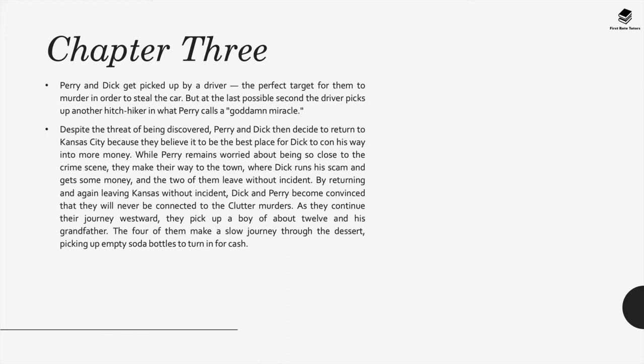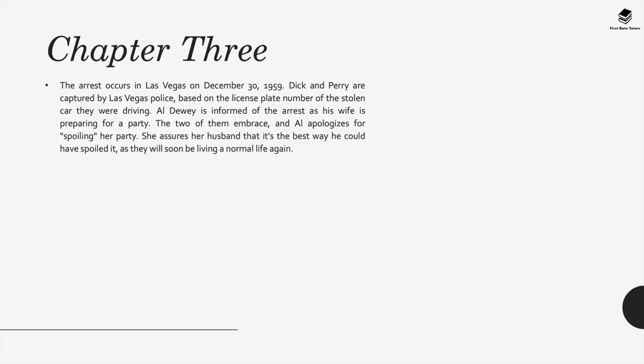Despite the threat of being discovered, Perry and Dick decide to return to Kansas City, believing it the best place for Dick to con his way into more money. By returning and again leaving Kansas without incident, Dick and Perry become convinced they will never be connected to the Clutter murders. As they continue their journey westward, they pick up a boy of about 12 and his grandfather, and the four of them make a slow journey through the desert, picking up empty soda bottles to turn in for cash. The arrest occurs in Las Vegas on December 30, 1959.